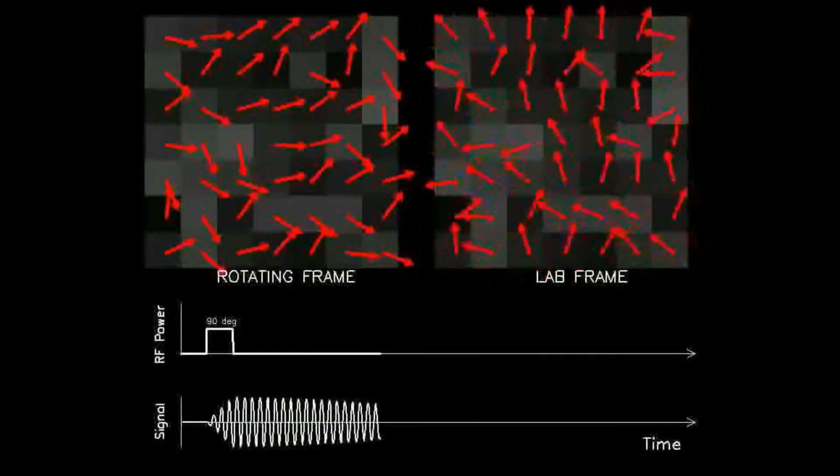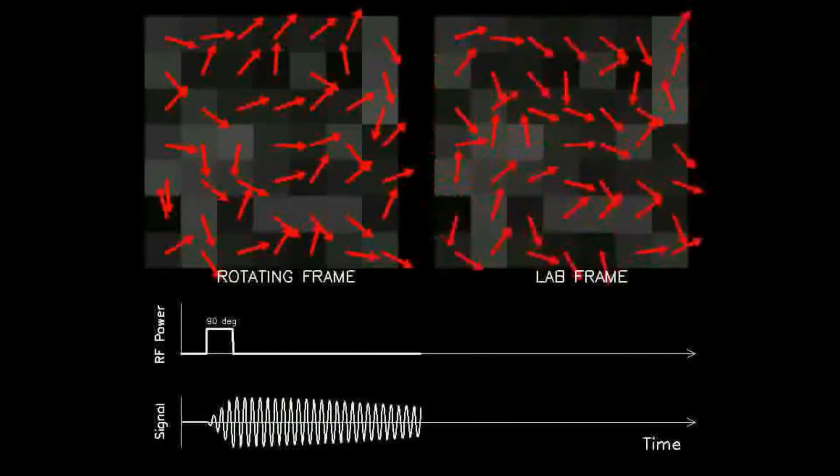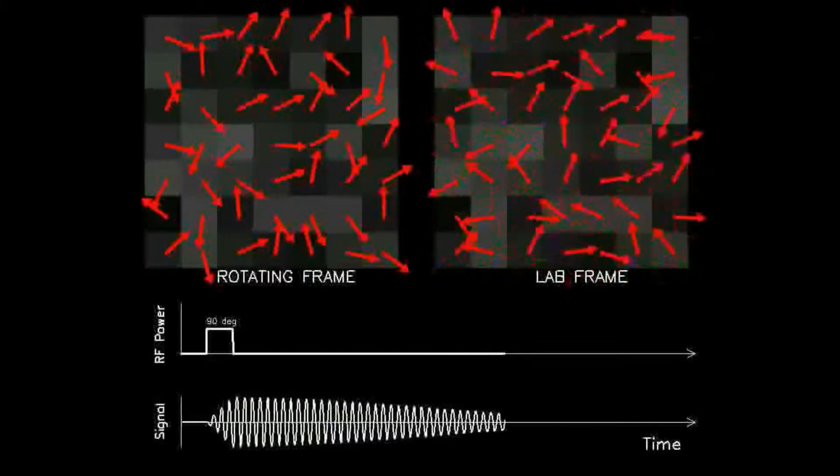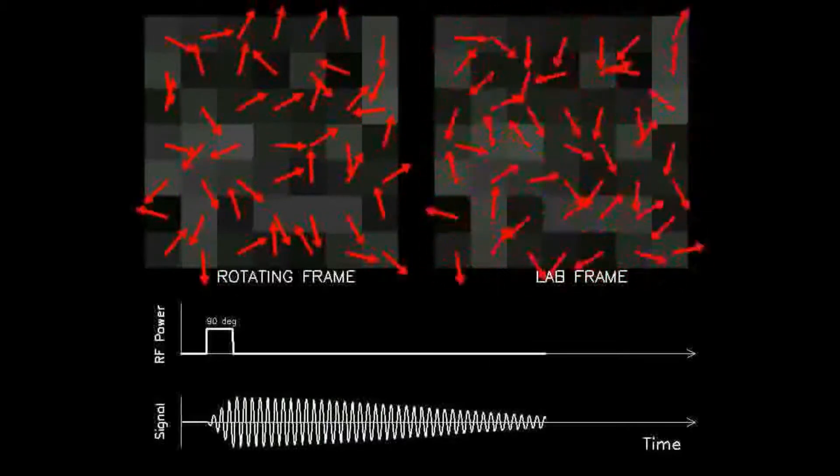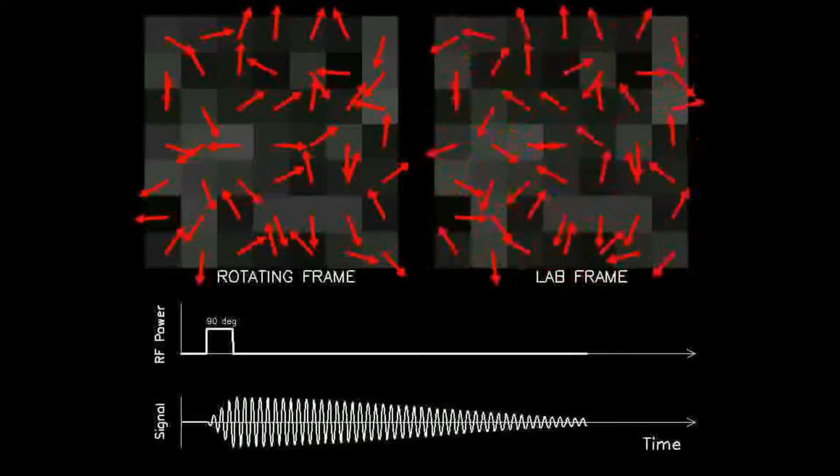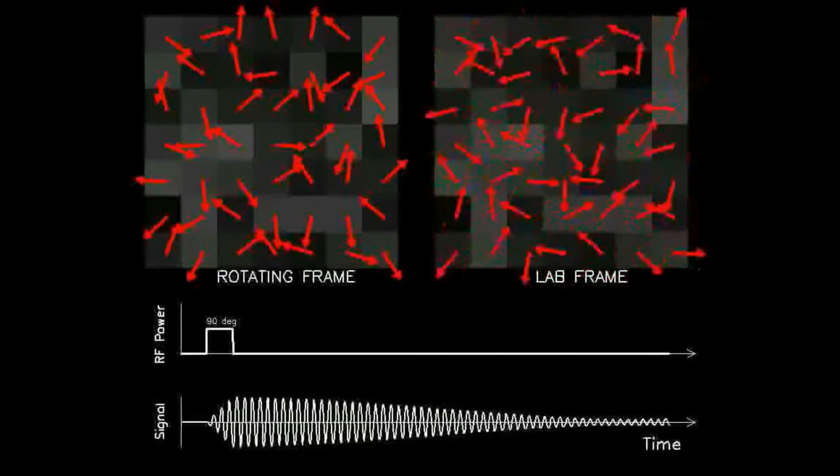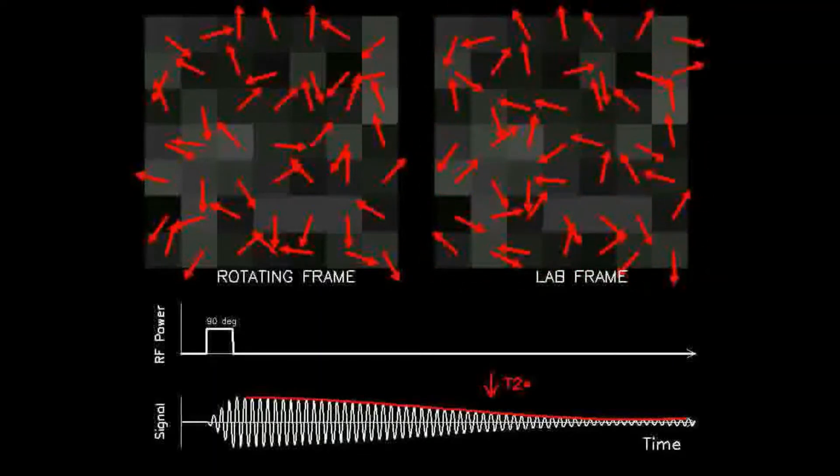Observe how the dipoles located in the bright square spin slightly faster and advance clockwise, while those in dark squares spin slightly slower and are retarded counterclockwise. Those dipoles with no change of magnetic field remain in fixed position, always pointing to the right.